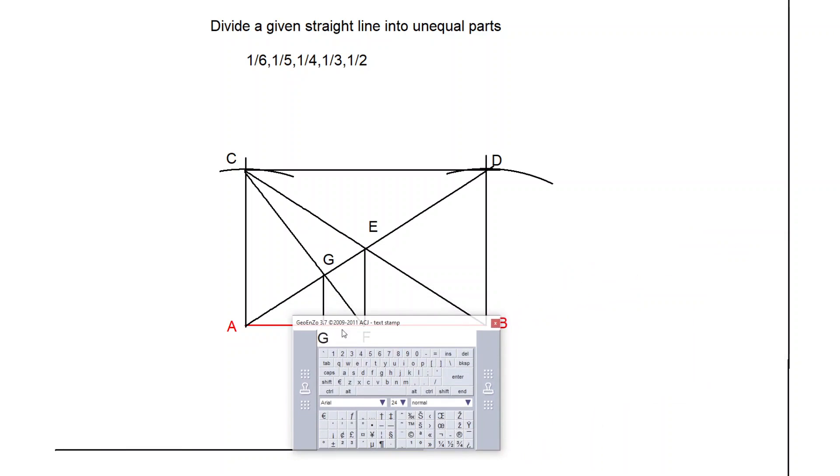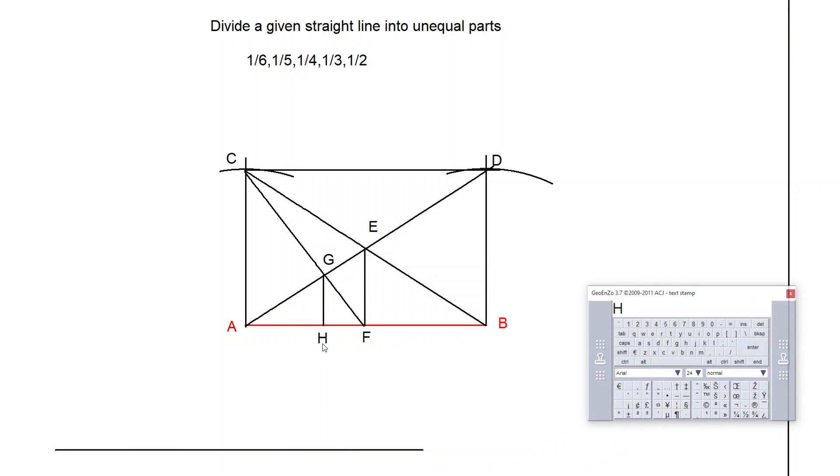You can give a name here as H. Then this AH is one-third of line AB.